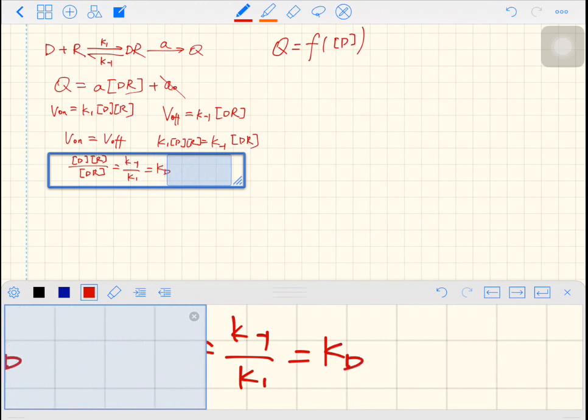And we have a new constant, which has a unit mole. This is very important. KD has a unit. And the KD is called the dissociation constant. This is the definition of KD. KD as the ratio between two rate constants.